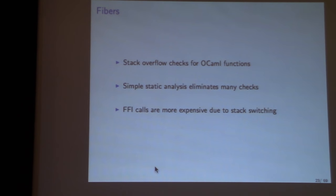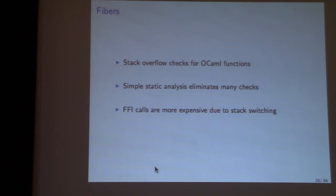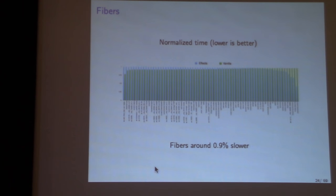FFI calls are somewhat more expensive because you have to jump back onto the system stack to call C and then jump back — switching stacks rather than just doing a function call. However, running the fiber-enabled runtime on a range of OCaml programs shows it's only about one percent slower. That's a reasonable cost for native support for these control effects, and in particular the main effect that motivated this work: concurrency.